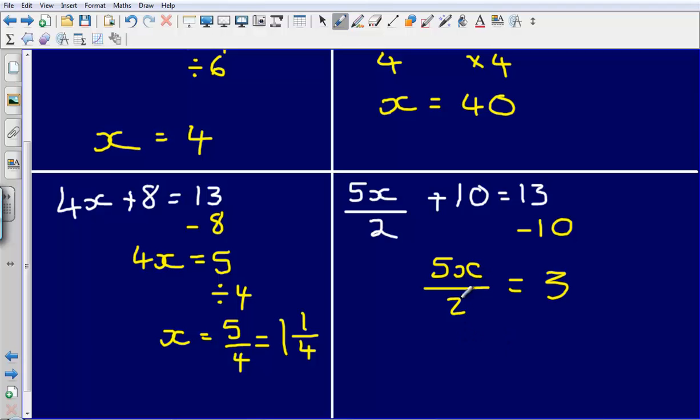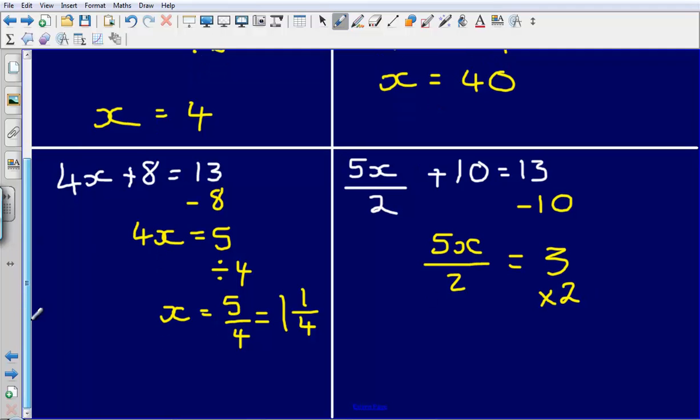Then what I'm left with is 5x over 2 equals 3. So this divide by 2, to undo the divide by 2, I'm simply going to multiply by 2. And that leaves me with 5x is equal to 3 times 2 which is 6.